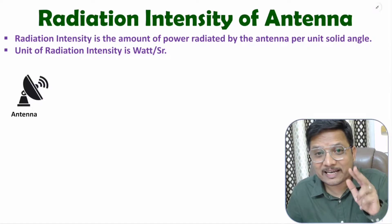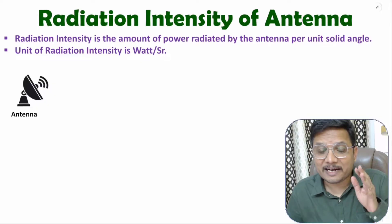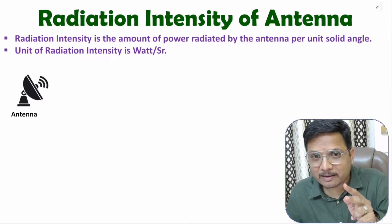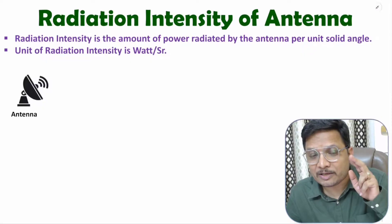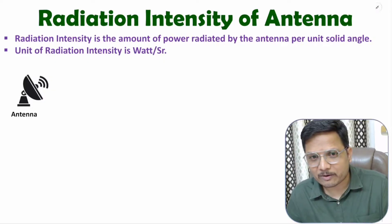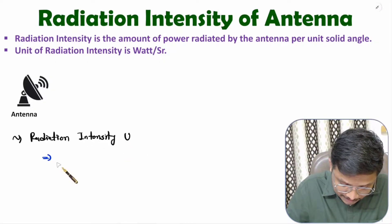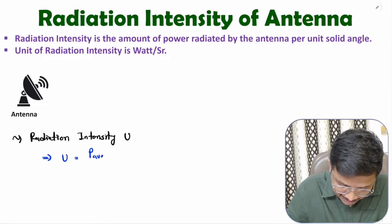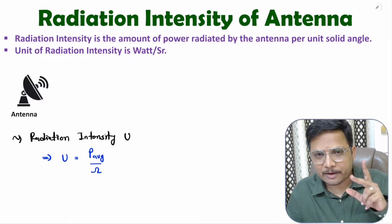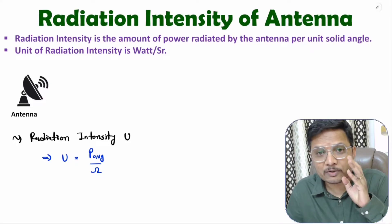Let me define first what is radiation intensity. Radiation intensity is average power per unit solid angle. So if you have average power and divide it by unit solid angle, then you will have radiation intensity. Radiation intensity U is calculated as average power radiated by antenna per unit solid angle. I'll now explain what is unit solid angle.